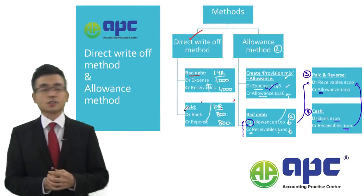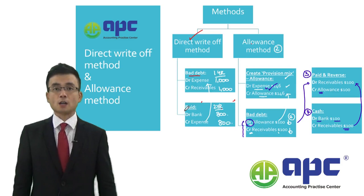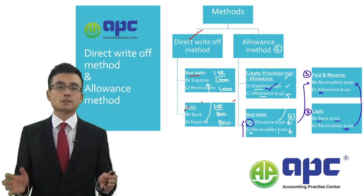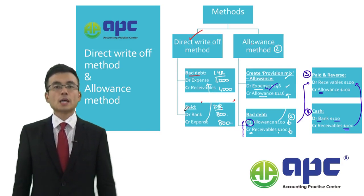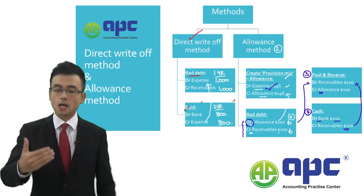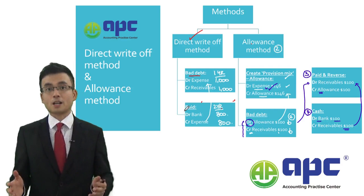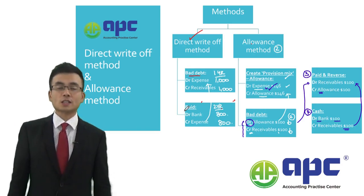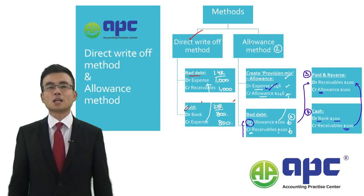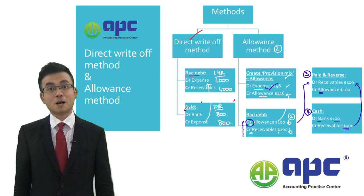In my article, I will also explain, according to IFRS 9 Financial Instruments, the expected credit loss model related to trade receivables impairment, and how provision mixes should be made in practice. If you're interested in studying ACCA courses with me, please check my website — I look forward to seeing you in my course.